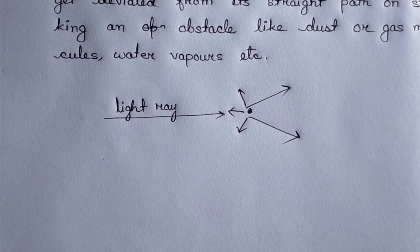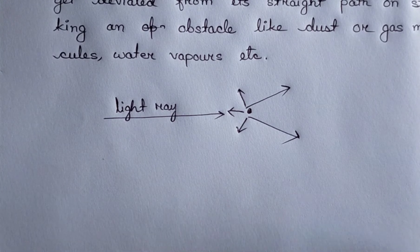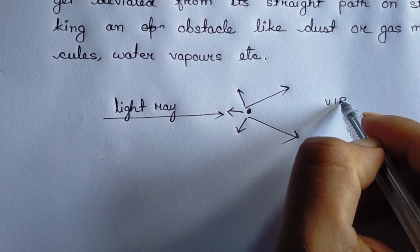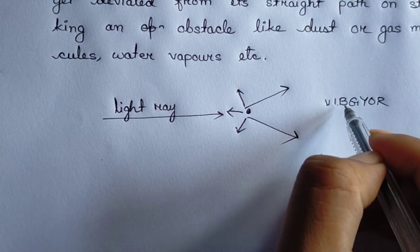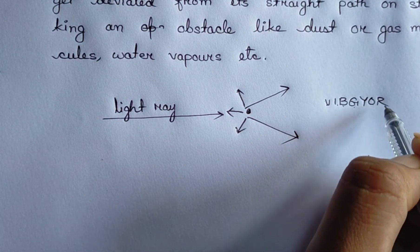Now the question is, which light scatters the most? Light, white light is compound of VIBGYOR colors: violet, indigo, blue, green, yellow, orange, red.